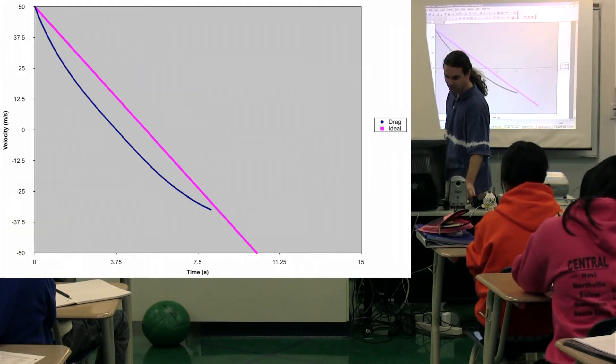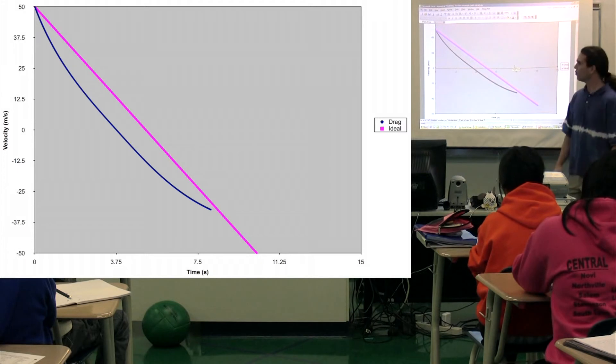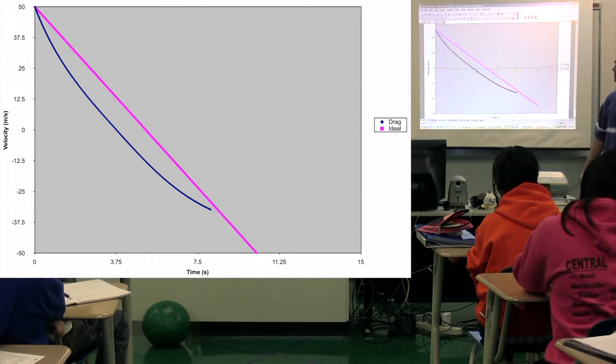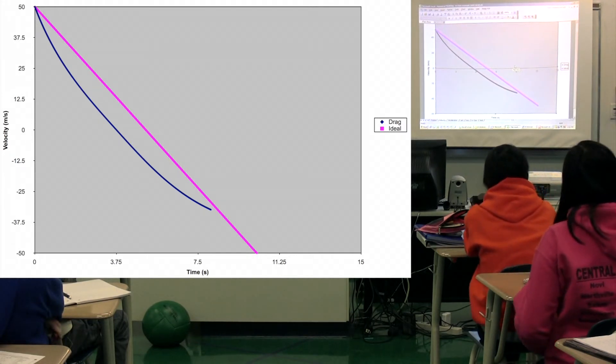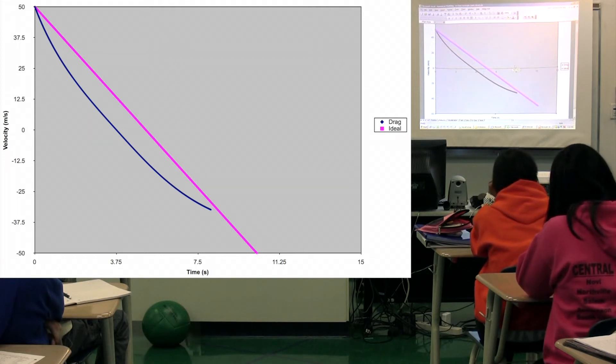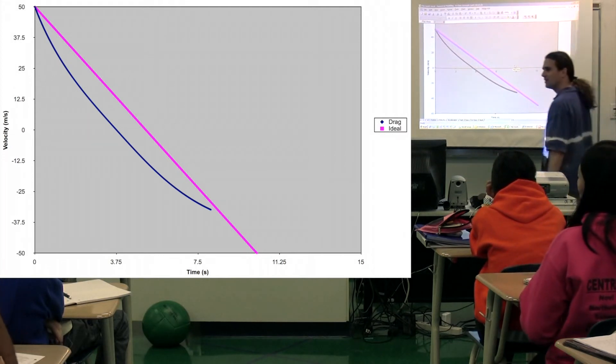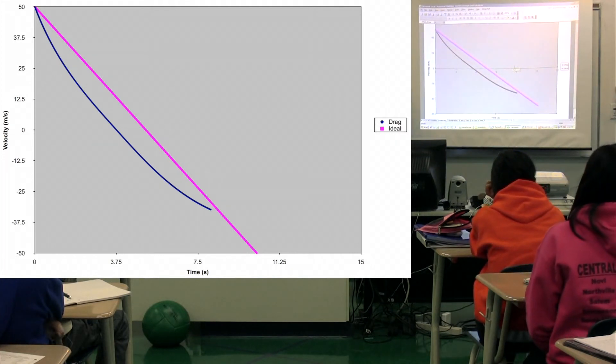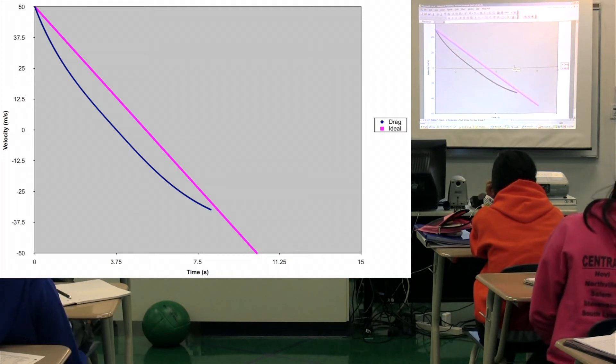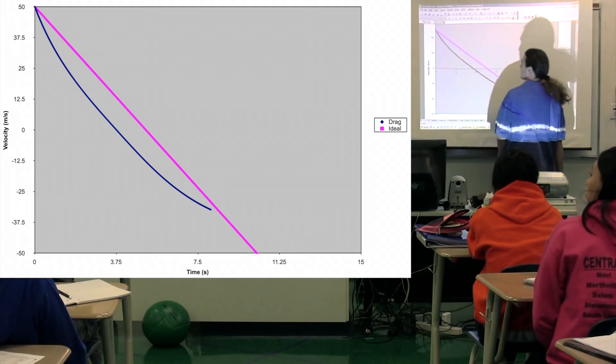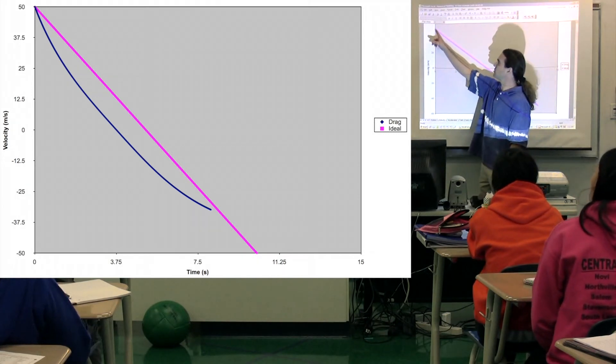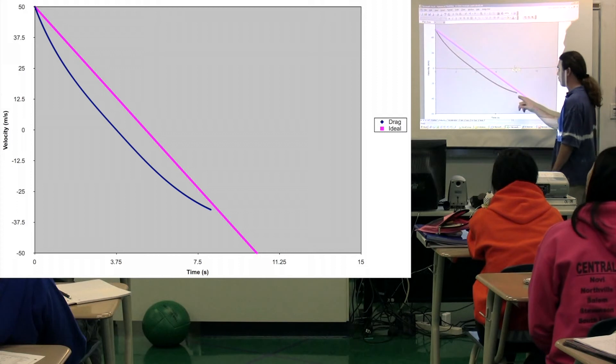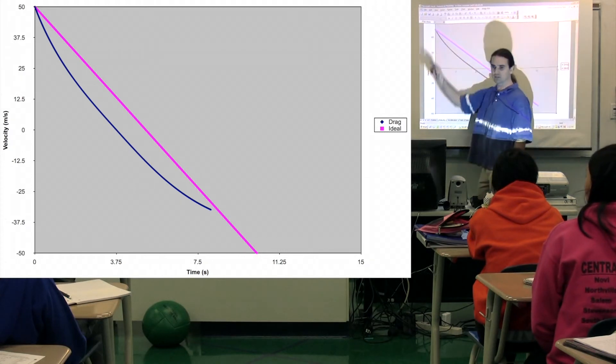The velocity is a function of time. Why is the velocity as a function of time, as an ideal case, why does it have a straight line? Sean. Because the acceleration is constant. And the slope of the velocity versus time graph is acceleration and your acceleration is negative 9.8. So this slope here you can see is negative 9.8. And you can see the original, or the one with drag, has a very different slope.